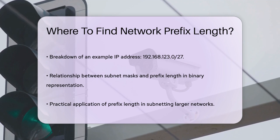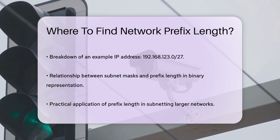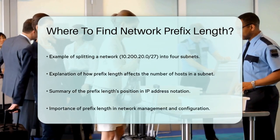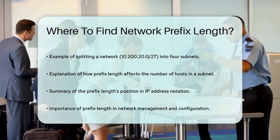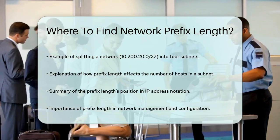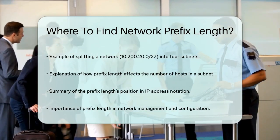For example, if you need to split a network like 10.200.20.0/27 into four subnets, you would calculate the new prefix length and the resulting subnets. Each new subnet would have a different network address, and the prefix length would help you determine how many hosts each subnet can have. In summary, the network prefix length is found right after the IP address, separated by a slash.